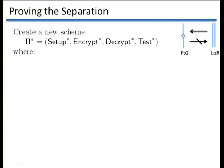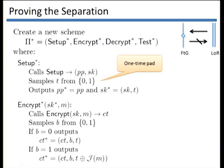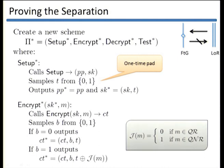We construct a new scheme Pi-star that is FTG-secure but not left-or-right secure. The setup algorithm calls the setup of the original scheme and samples a random bit T from {0,1} — the one-time pad. The encryption algorithm calls the original encryption and outputs ciphertext CT. Each call samples a random bit B: if B equals 0, it outputs the ciphertext, the bit B, and the one-time pad T; otherwise, it outputs the ciphertext, the bit B, and the one-time pad masked with the sign of the message — where the sign indicates whether the message is a quadratic residue or not.